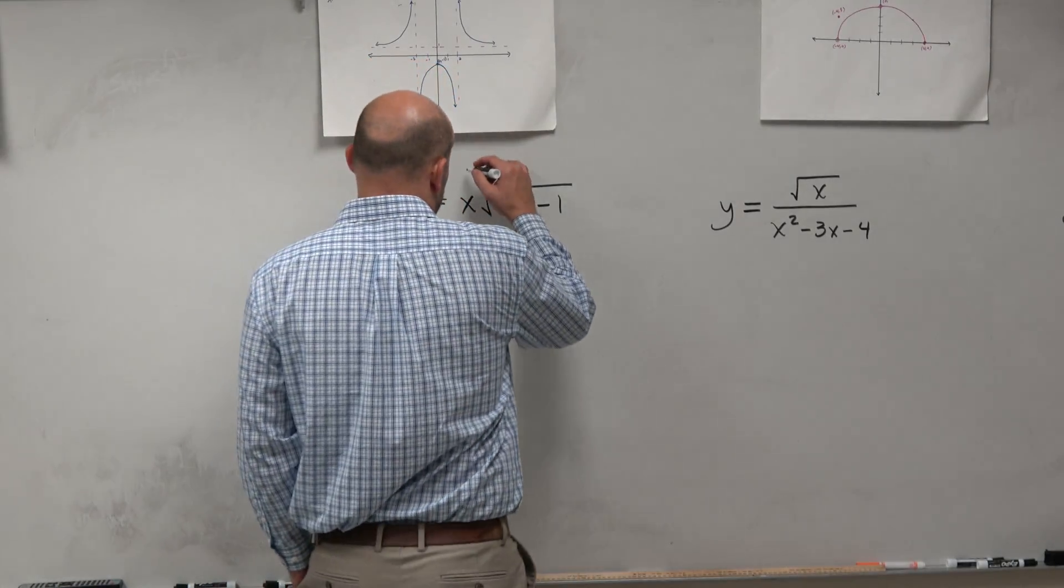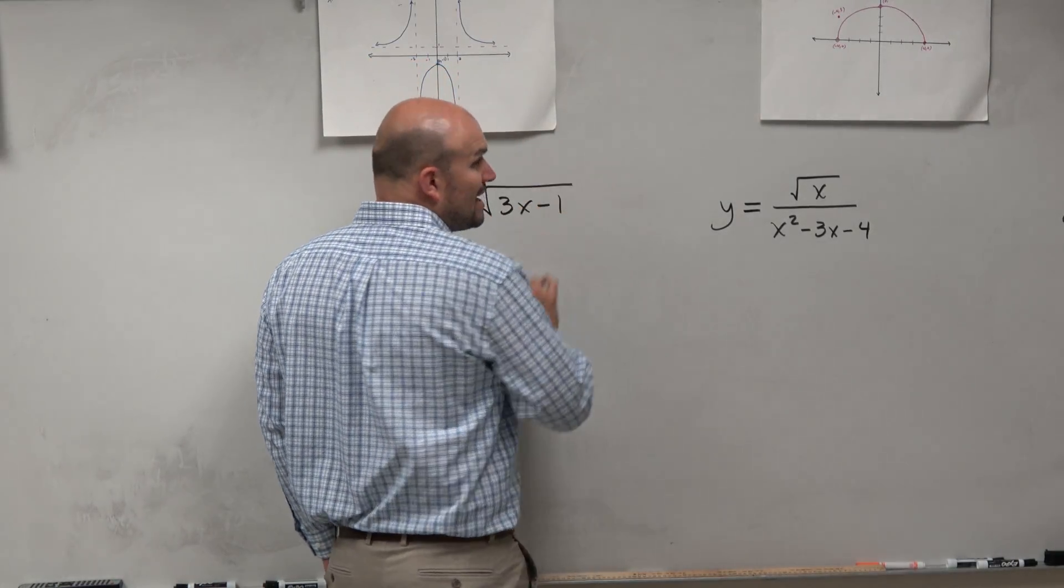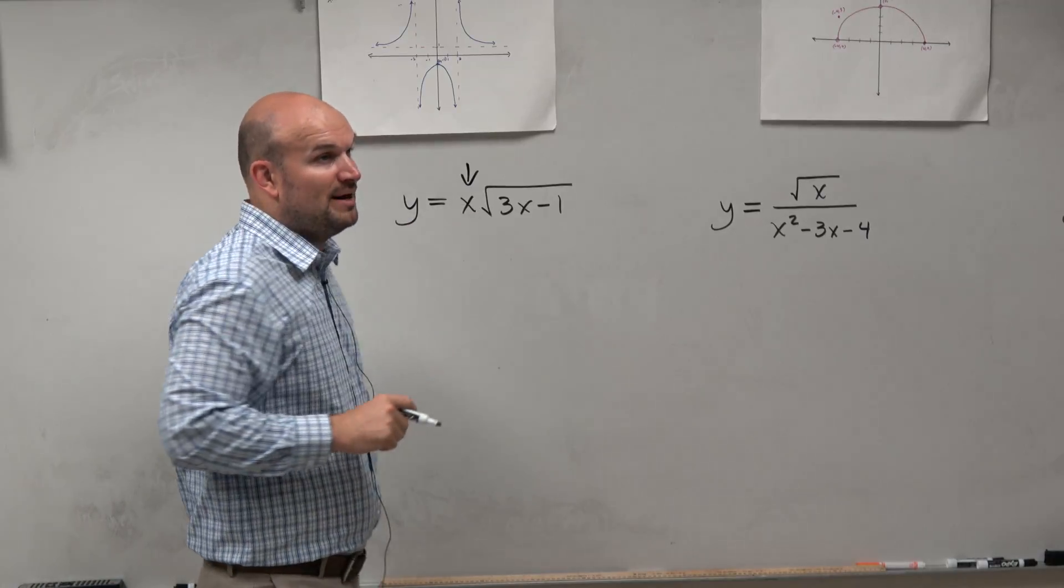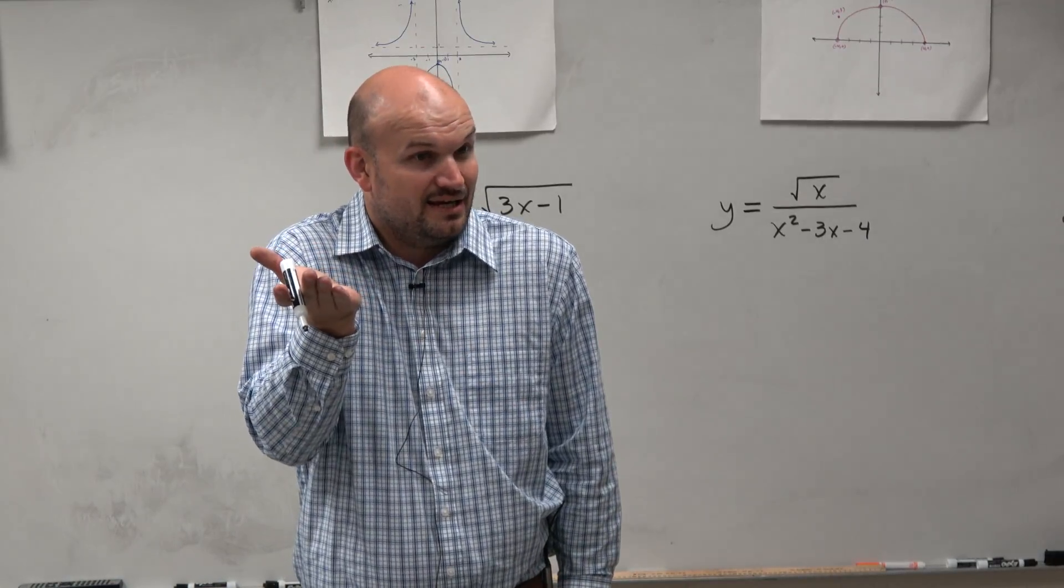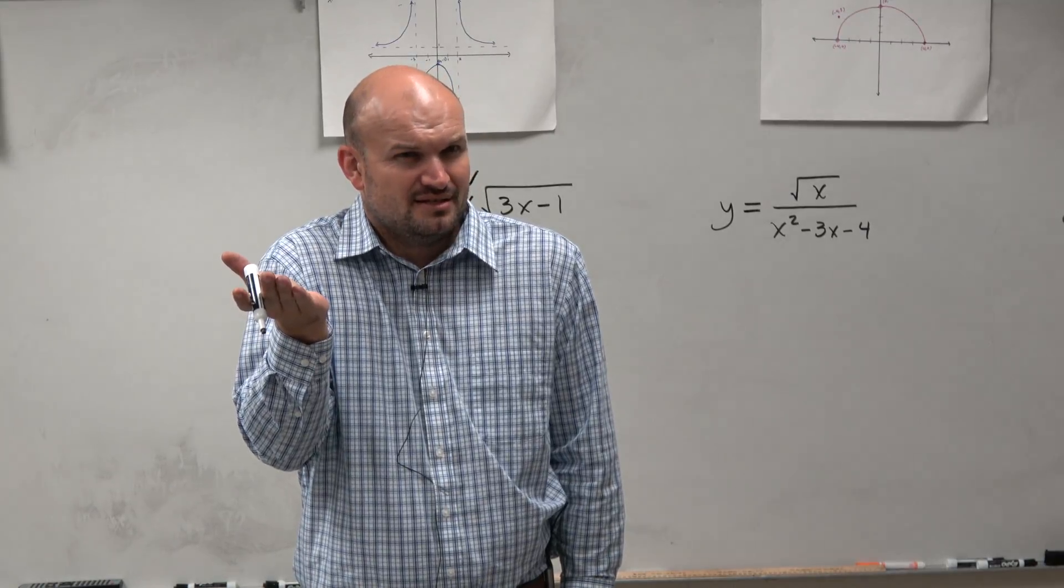You guys can see we have a variable, a value x, times this radical. Now what is something I already know about the function x? That's a linear, right? That's the identity. Does that have any discontinuities? No.